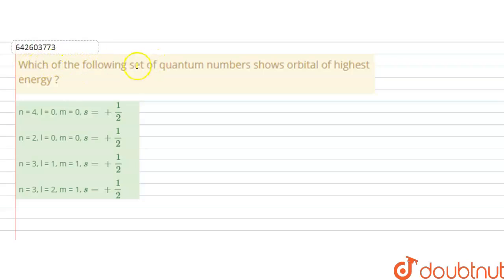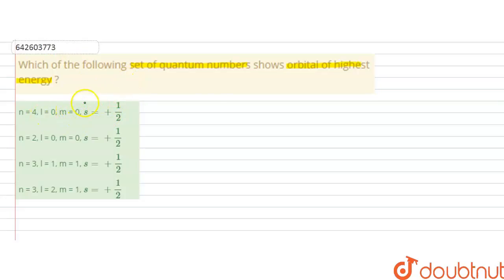...shows the orbital of highest energy? In this question, a given set of quantum numbers is provided and we have to choose the correct option — which orbital has the highest energy.